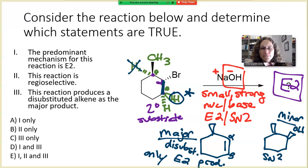Let's take a look at our statements and determine which ones are true and which ones are false. The first statement says the predominant mechanism for this reaction is E2. That one is true. Second, the reaction is regioselective. Regioselective means you make multiple regioisomers, and that's not the case here. Regiochemistry is referring to the alkene products, and we only make one. So this would be a regiospecific E2 reaction. So this statement is false.